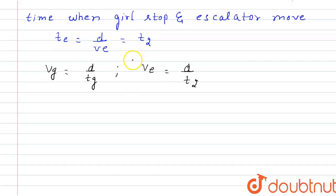Now when both girl and escalator move up, when both move up, the velocity of girl with respect to ground equals vg plus ve. Now we know that time taken, time equals distance by speed, that is d divided by vg plus ve.